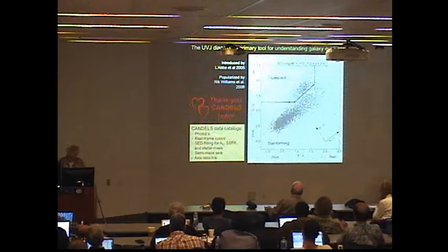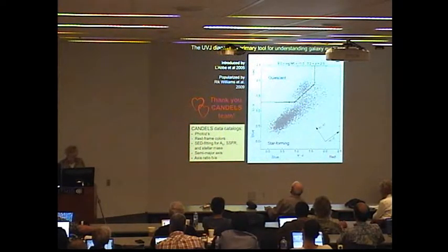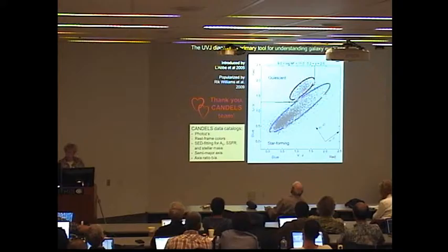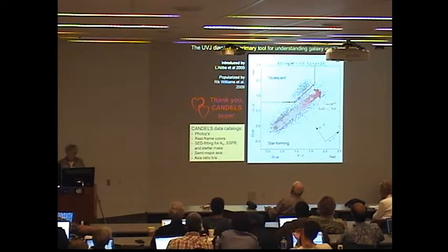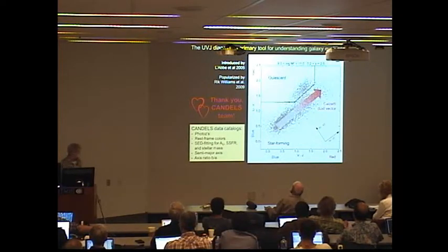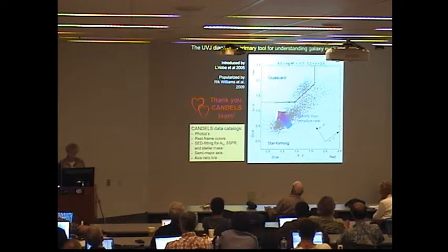So what I'm going to use to discuss dust and star formation today is the UV-J diagram. And it was invented to distinguish between star forming and quiescent galaxies. The elongation of the star forming galaxies is thought to be this dust parameter here, which follows the Calzetti reddening vector. Not so well known, but emerging is the fact that the crosswise dimension also carries information. And that's information on the specific star formation rate.